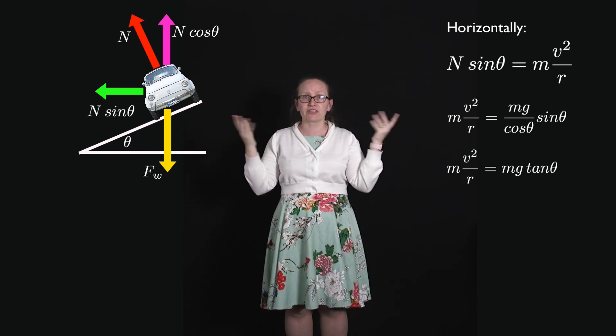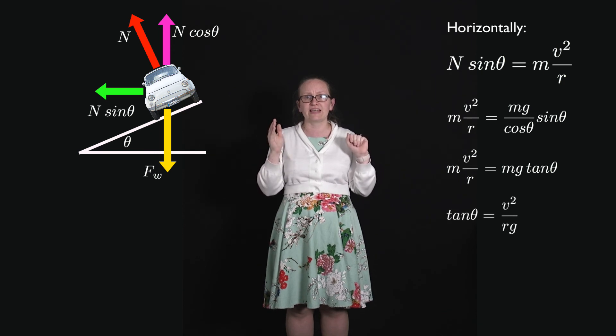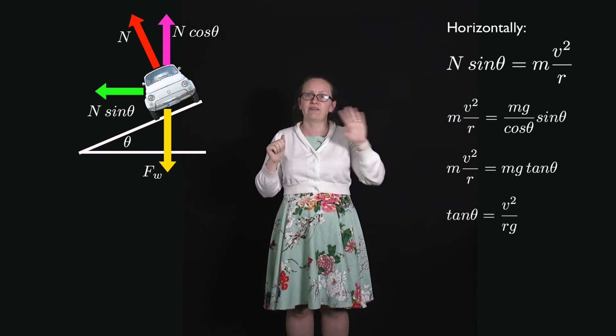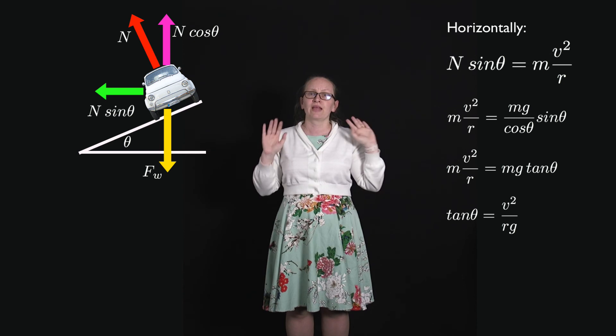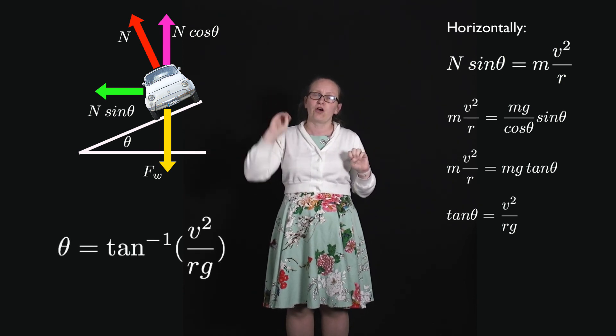We can divide both sides by m, and so rearranging this we have tan θ is equal to v² divided by rg. And so θ is equal to the inverse tan of v² over rg.